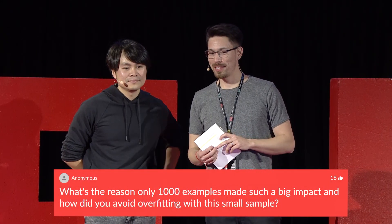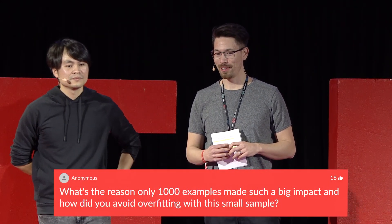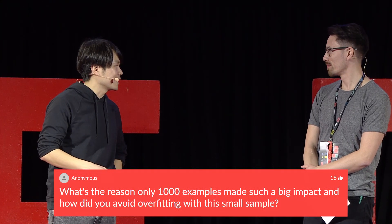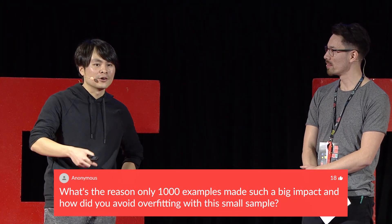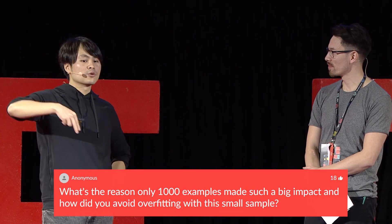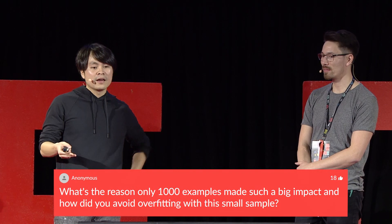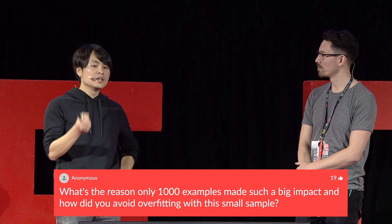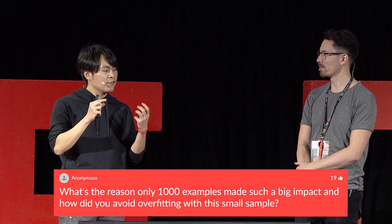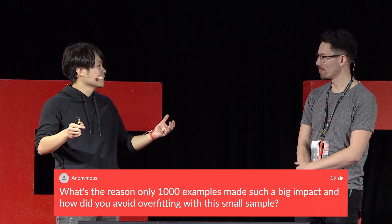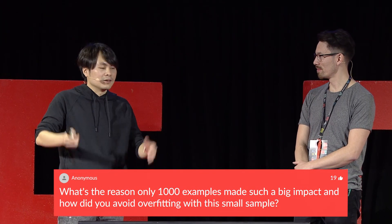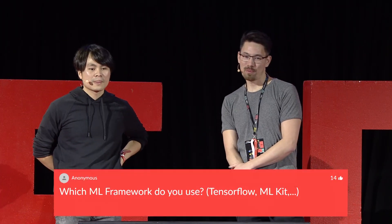Q: What's the reason only a thousand examples made such a big impact, and how did you avoid overfitting with such a small sample? A: We didn't start with 1,000 examples — we started with 100 or 200, fully overfitted to verify the approach works, then increased the size. The key to avoiding overfitting is a very well-controlled test set, which we called our gold dataset. That lets us track loss and accuracy reliably.